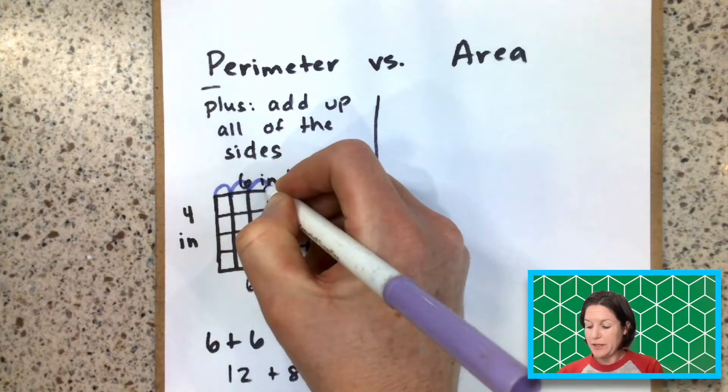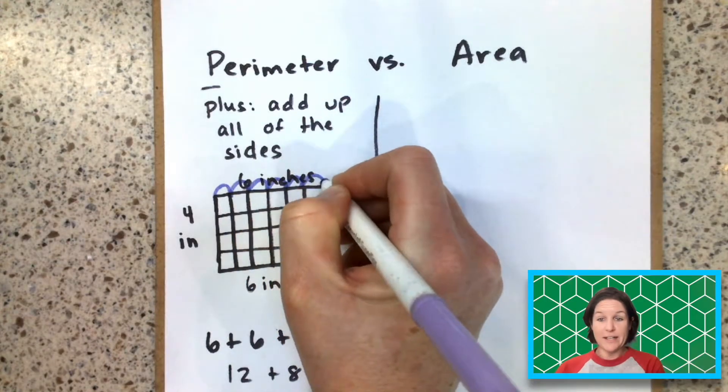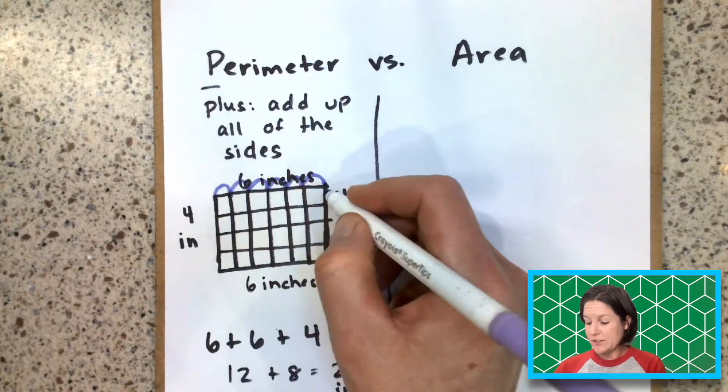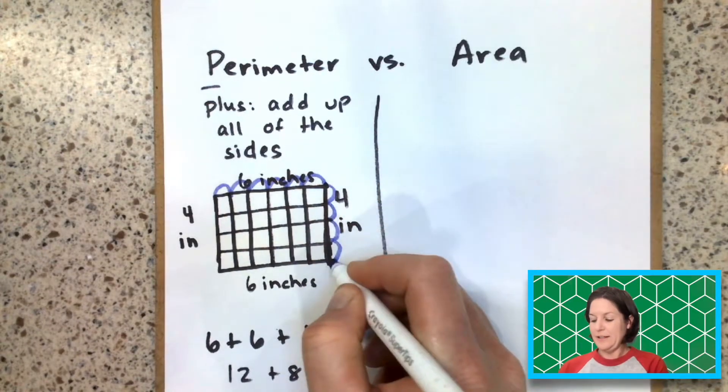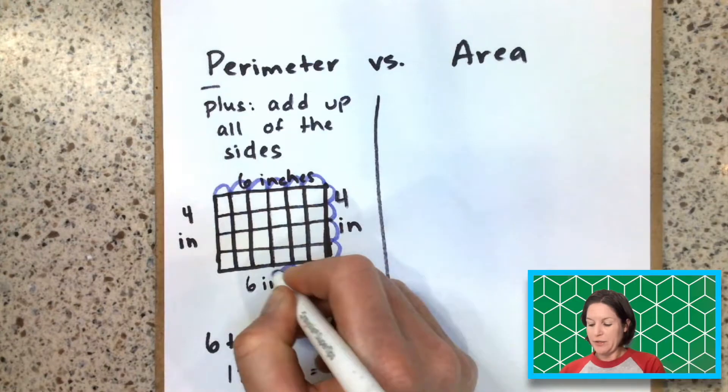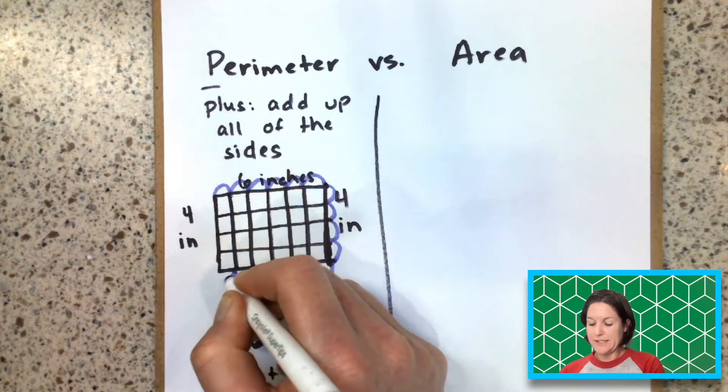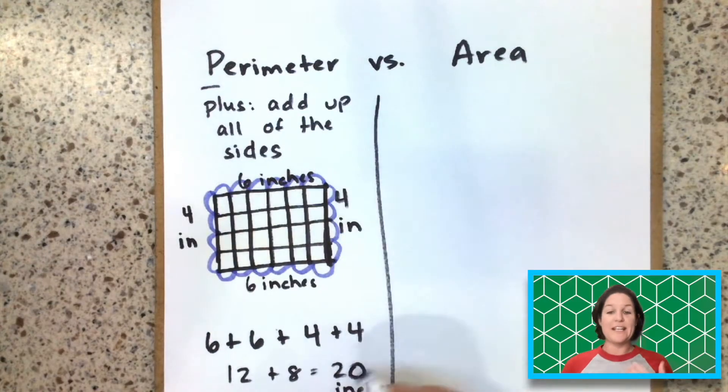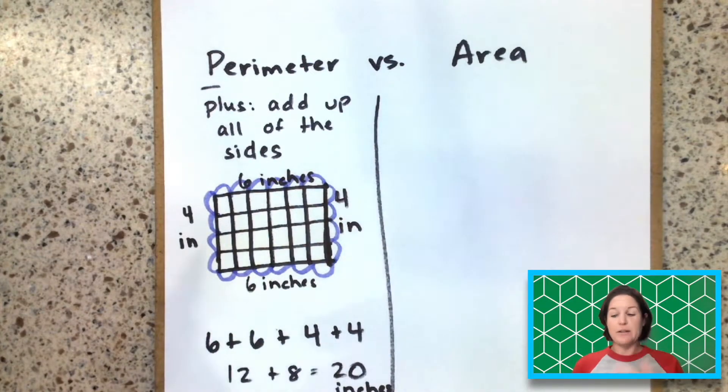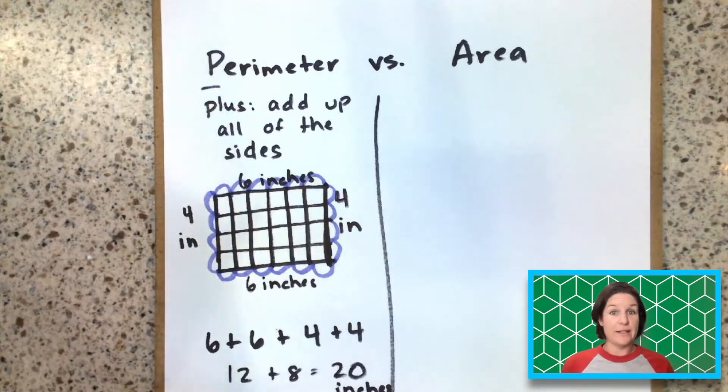So one, two, three, four, five, six, that's how we get our six inches, seven, eight, nine, 10, 11, 12, 13, 14, 15, 16, 17, 18, 19, 20, 20 inches. That's another way to count it up if they're seeing it in an array like this.